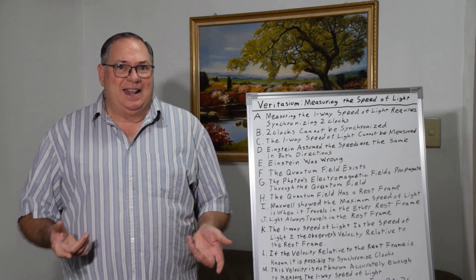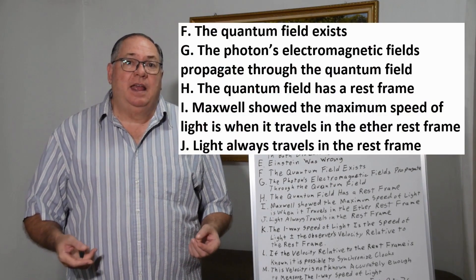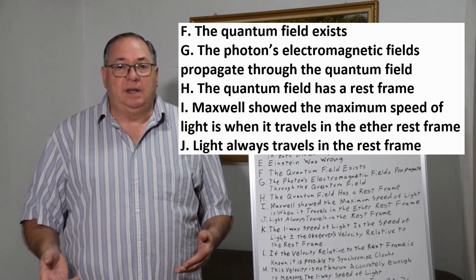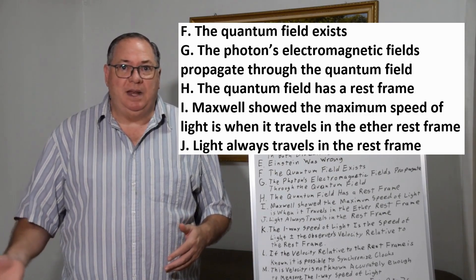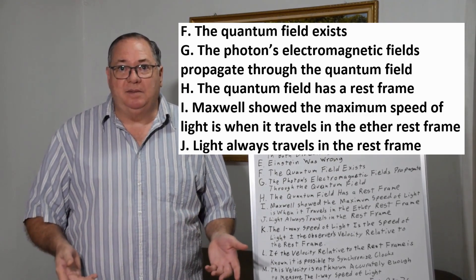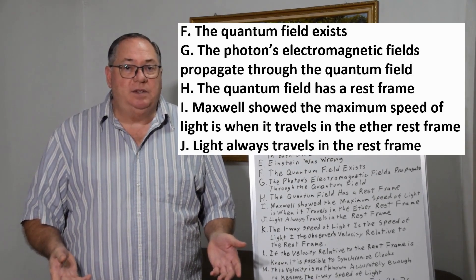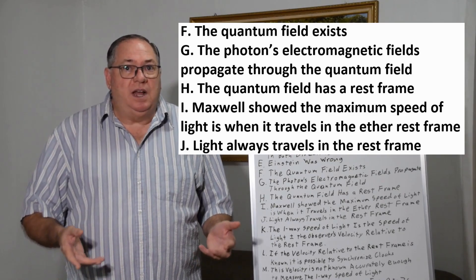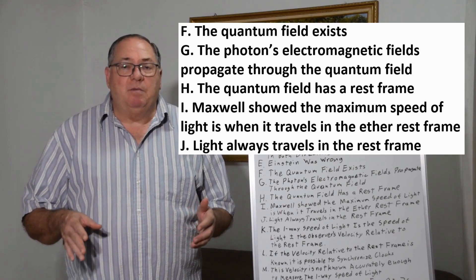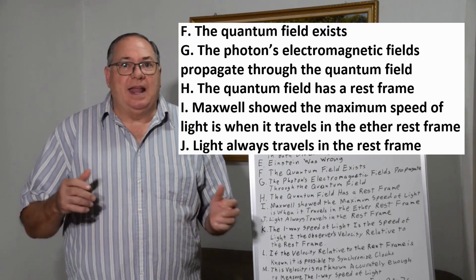Now as he says, Einstein's assumption of the speed of light being the same in both directions is just an assumption, a simplification, and it happens to be wrong. The reason it's wrong is because Einstein was a quantum field denier. He said there wasn't an ether, there wasn't a field, there wasn't a medium of transmission for light. But now we know there's a quantum field. We know it behaves like it's made of dipoles, and we know the photons produce rotating electric and magnetic waves which interact with those dipoles. So photons are constantly interacting with the dipole field around it. Because of that, it means that photons travel in the rest frame.